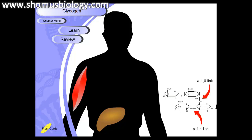Liver uses glycogen as a reservoir for maintaining blood glucose levels in the body. It's very important that there is a constant supply of glucose to cells so they can utilize glucose metabolism processes to produce energy. Muscle also uses glycogen as a reservoir for glucose for energy production.